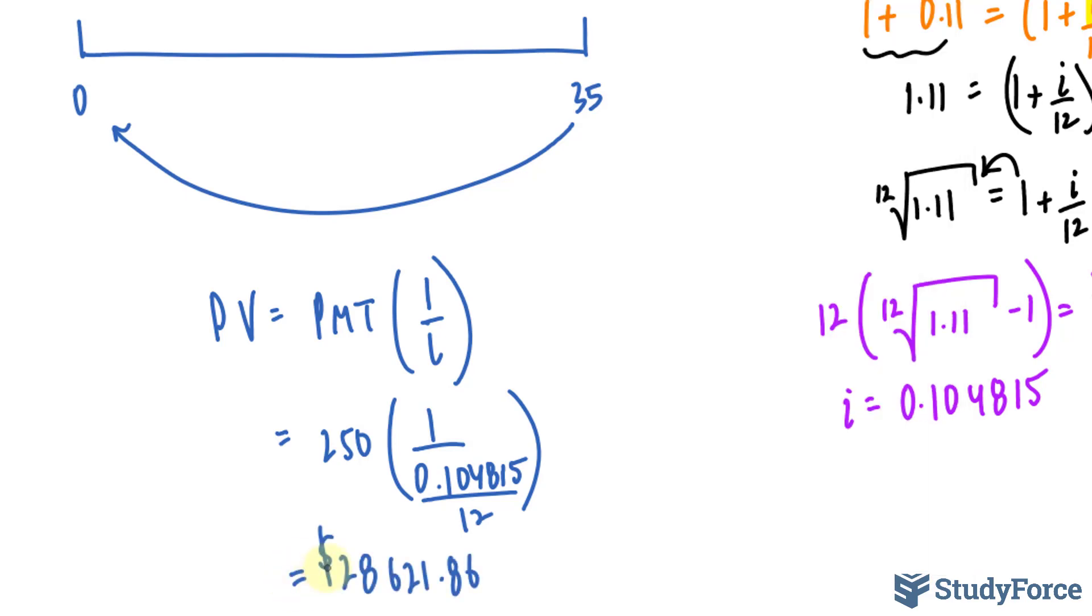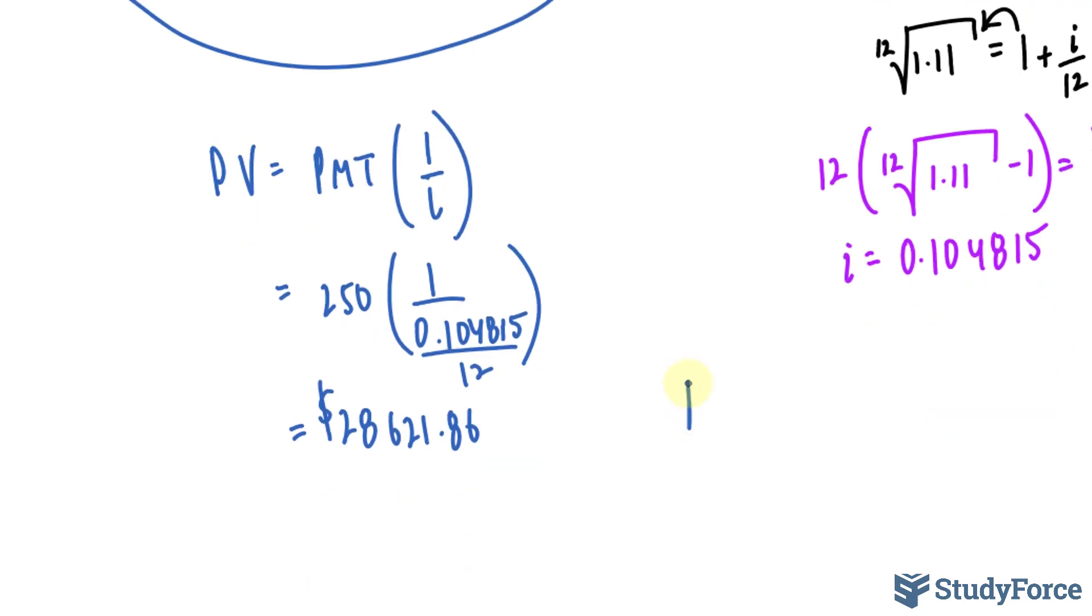And we end up with 28,621.86. So that right there is the present value at 35 months. Now we need to discount this back, and we can do that by using the future value formula. Future value is equal to the present value PV, and in parentheses, 1 plus i raised to the power of n.